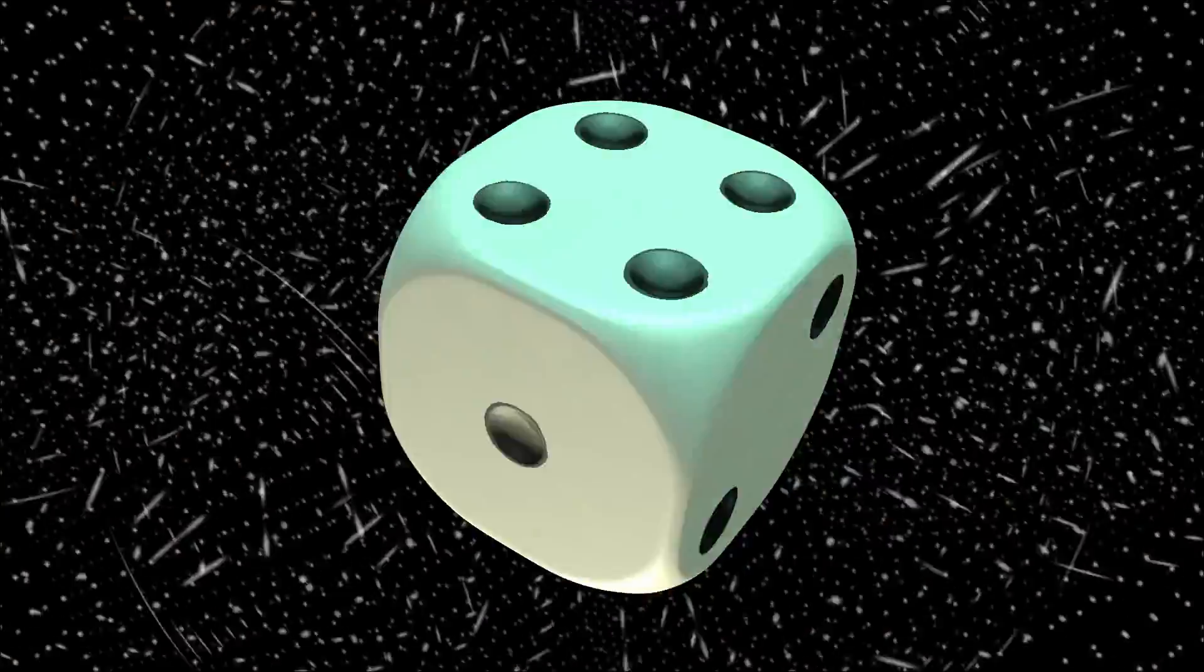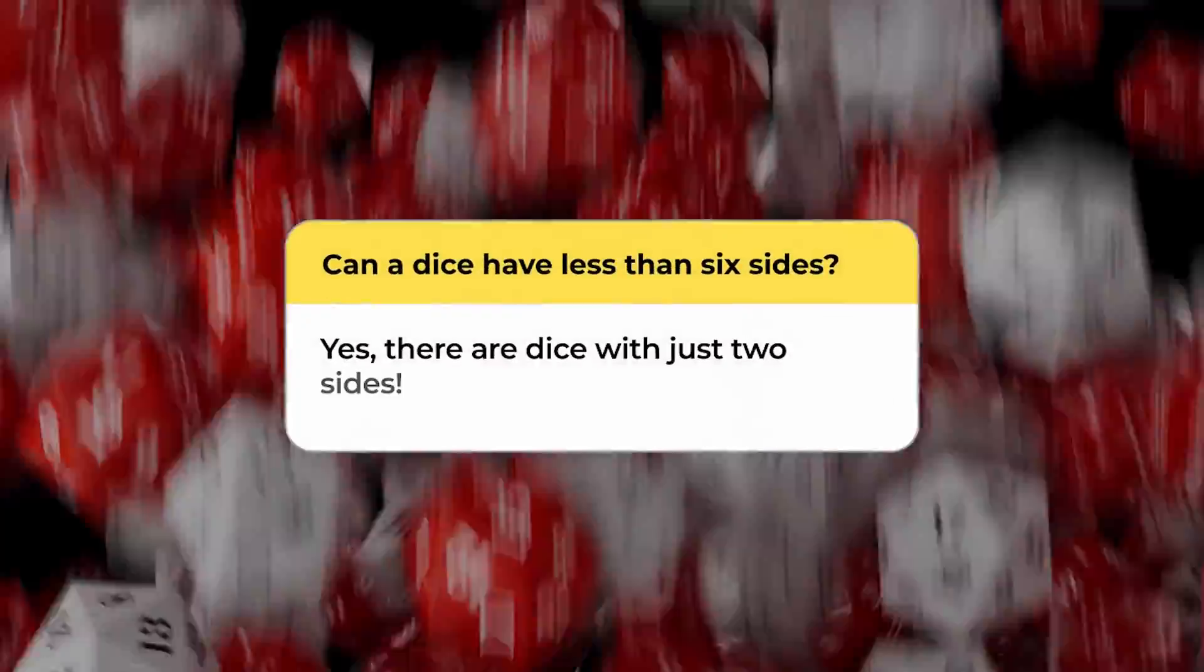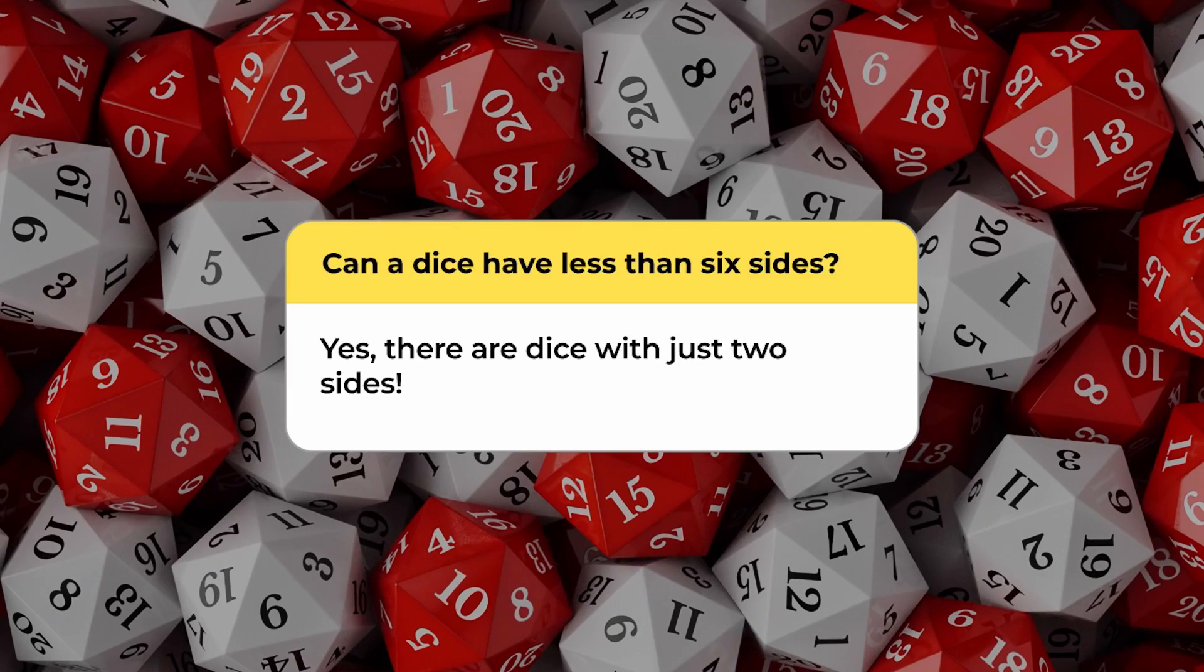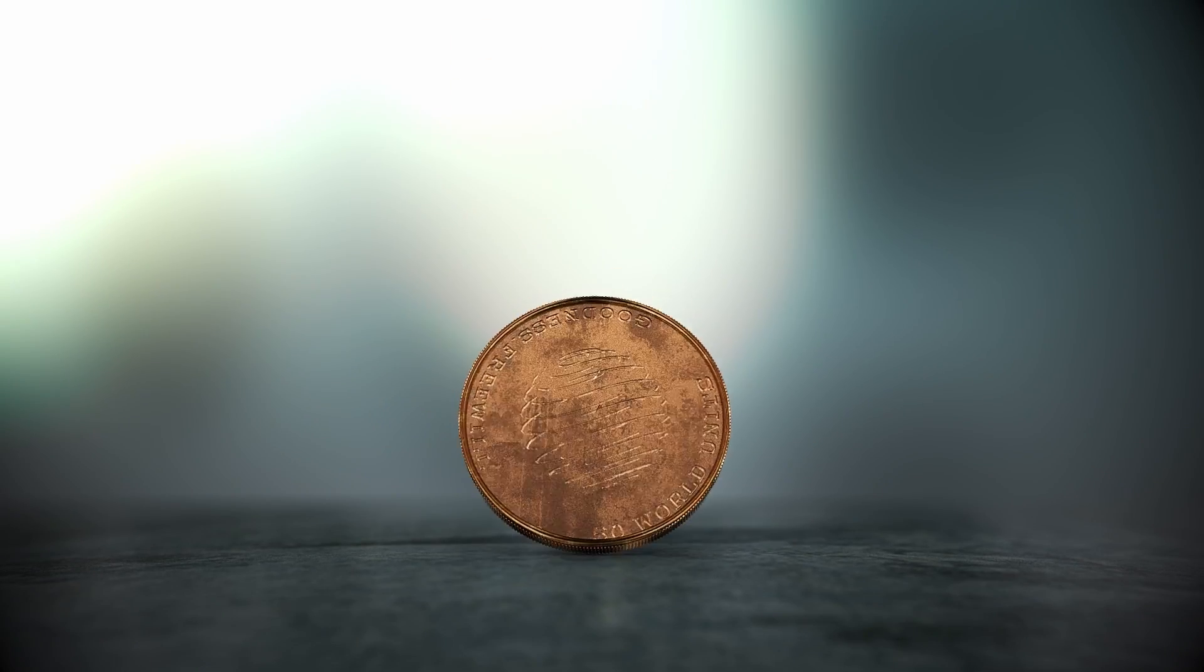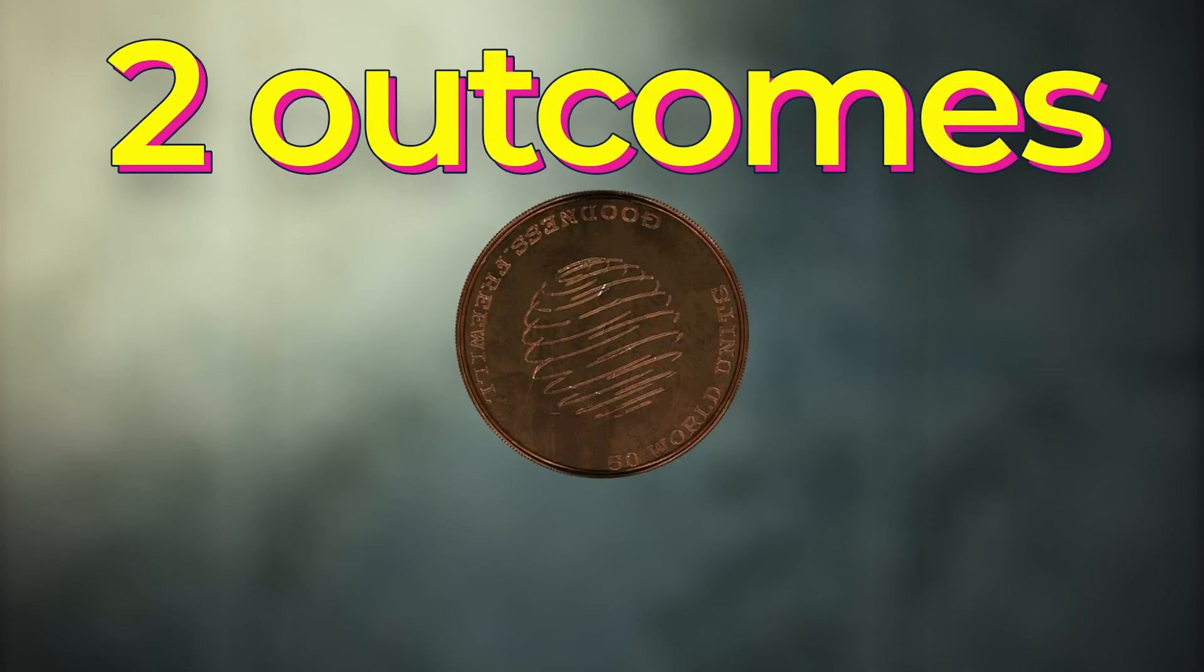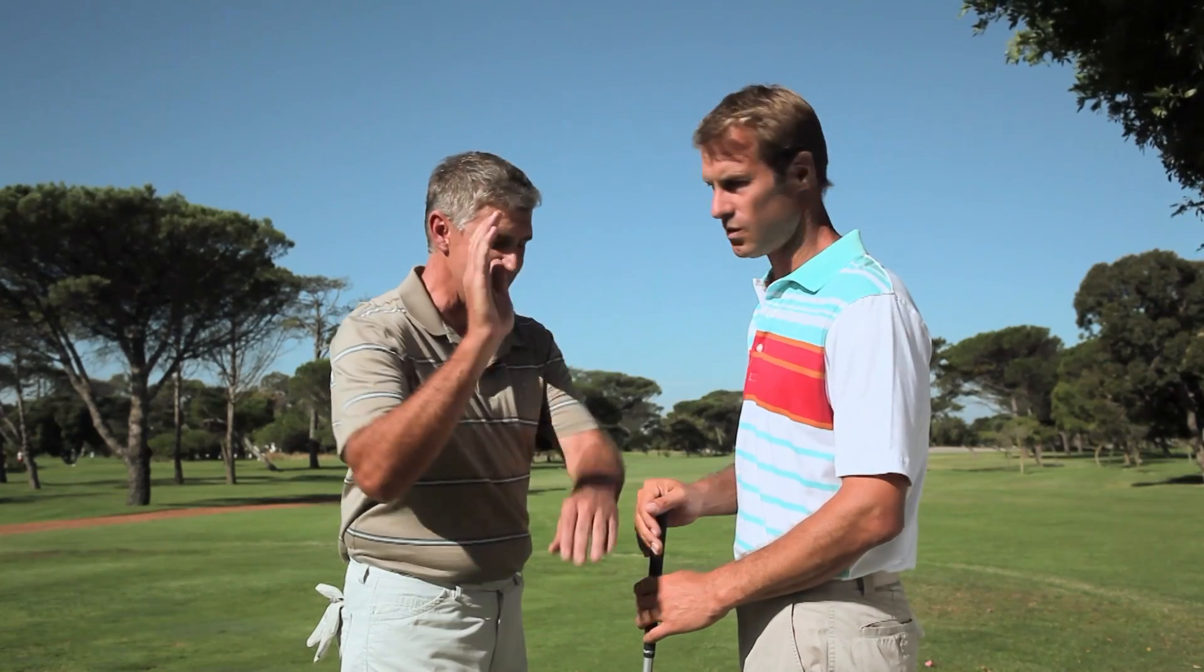Dice aren't just limited to six faces. There are dice with even fewer sides, including those with just two. These might not sound familiar until you hear their more common name: coins. Coins offer a simple die roll with only two outcomes and are frequently used in games.